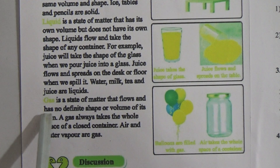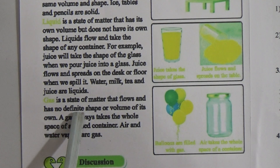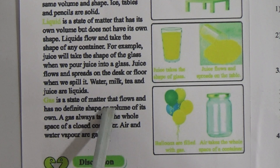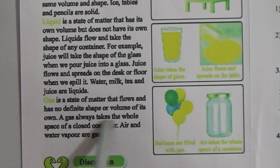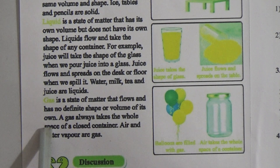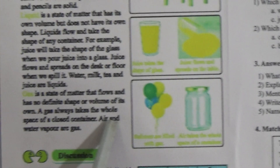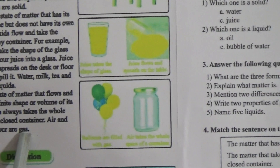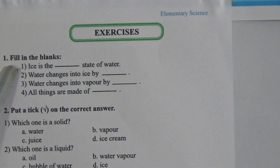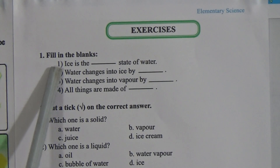Gas is the state of matter that flows and has no definite shape or volume of its own. A gas always takes up the whole space of a closed container. Air and water vapor are gases.